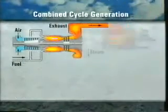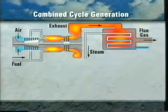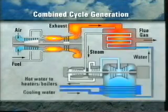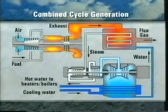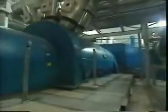In a typical combined cycle, high temperature exhaust gases from the gas turbine are used to generate steam which then drives a steam turbine. In this way, much of the waste heat from the gas turbine is recovered. Less steam is required...